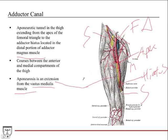The quadriceps muscles — rectus femoris, vastus lateralis, and vastus medialis — all converge on the quadriceps tendon. The aponeurosis extends out from the vastus medialis to encase the vessels as they travel through this part, just before they reach the distal portion of the adductor magnus muscle.